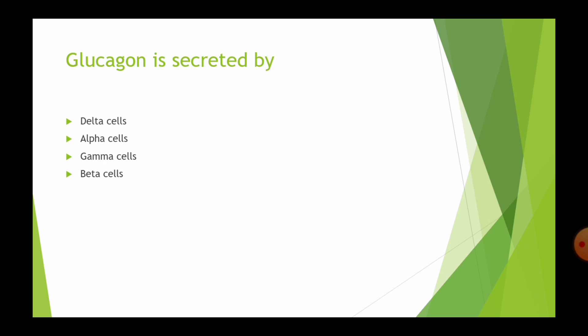Next question, Glucagon is secreted by Delta cells, Alpha cells, Gamma cells and Beta cells. Glucagon is secreted by the Alpha cells of pancreas.